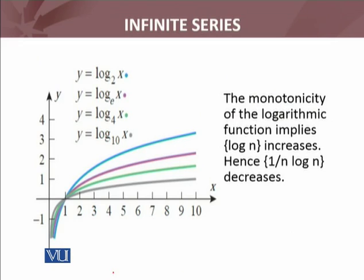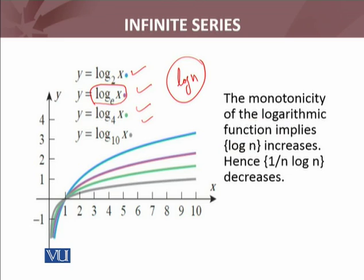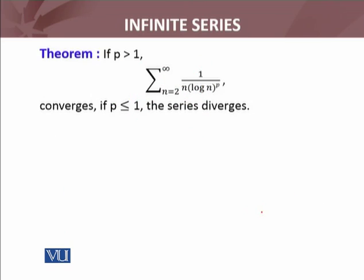For the formal proof, we first observe that log base e of x is a monotonically increasing function. Here are different graphs — this purple graph is log_e(x). Since log n is monotonically increasing, 1 over n times log n, as a function of n, is a decreasing function. We will use this in the proof. So we have the theorem: p greater than 1 gives convergence, p less than or equal to 1 gives divergence.